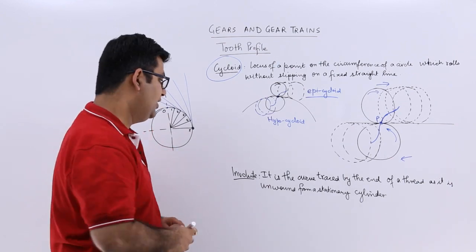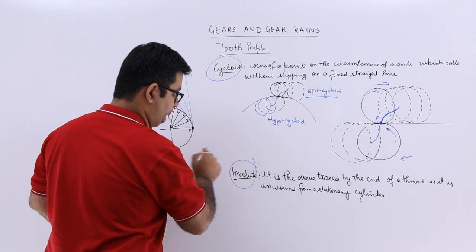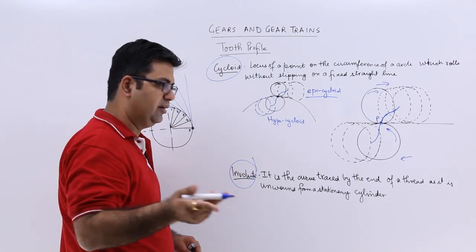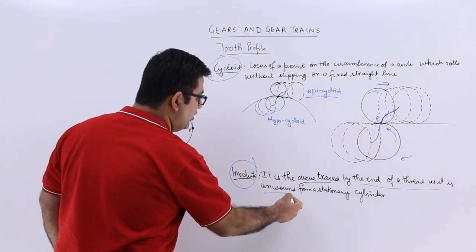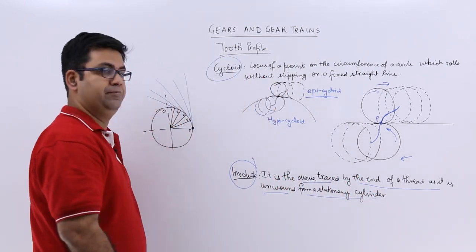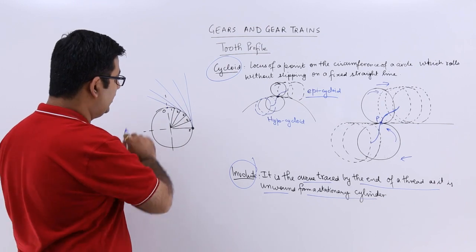Next kind of tooth profile is involute profile. Now an involute curve is traced by the end of a thread as it is unwound from a stationary cylinder. So let us have a look at this particular diagram.